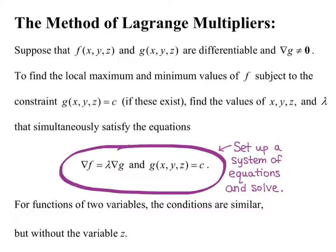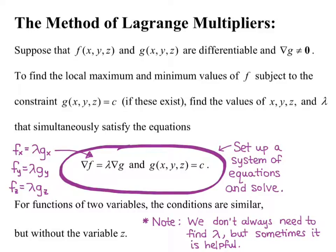The gradient part translates to: the partial derivative of f with respect to x equals lambda times the partial derivative of g with respect to x, and similarly for the partial derivatives with respect to y and z. So our system of equations will have each of these partial derivative equalities and the constraint. We don't always need to find lambda, but sometimes it can be helpful when solving the system. The system will not always be linear, so you can't use matrix algebra — you have to get creative to solve it sometimes.